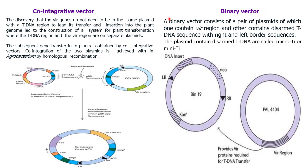The binary vector consists of a pair of plasmids: one contains the vir region, and the other is a disarmed T-DNA consisting of p-T-DNA sequence with the right and left border sequences. Plasmids containing disarmed T-DNA are called micro-Ti or mini-Ti.